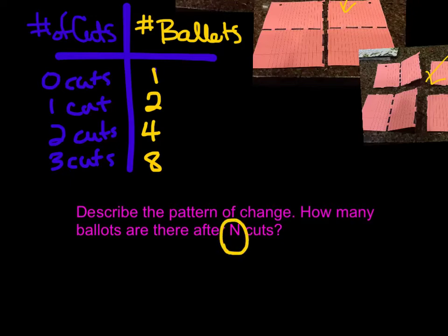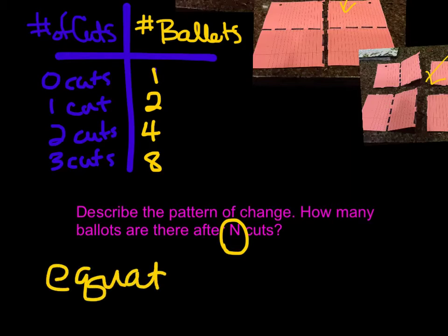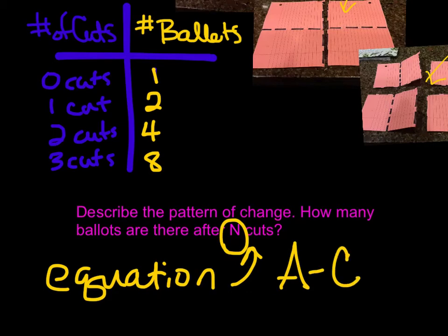I'm not just asking for how many ballots there would be after eight cuts or ten cuts. I'd like you to make it super general — what if we don't know how many cuts there are? What if there's a million cuts? That's too hard to actually do all the math for. So let's figure out what equation will get us that. Your job is to do A through C for this investigation, which begins on page eight. Try your hand at it. Enjoy.